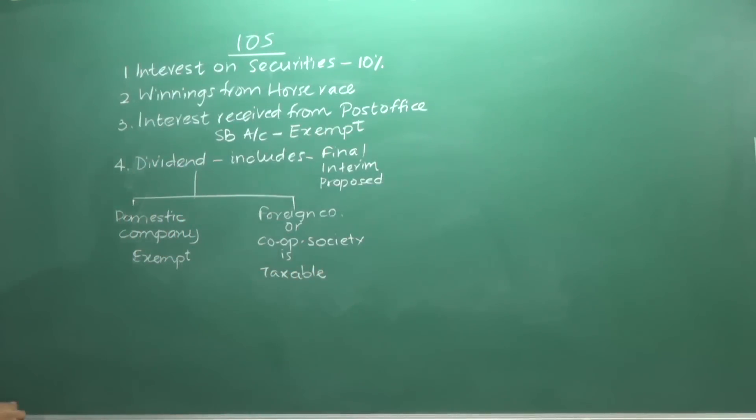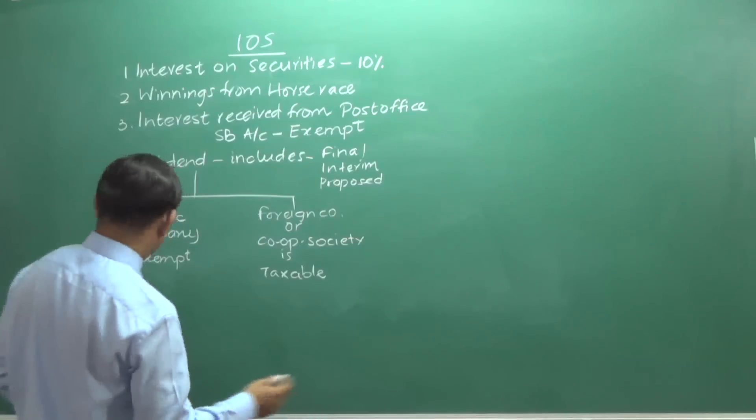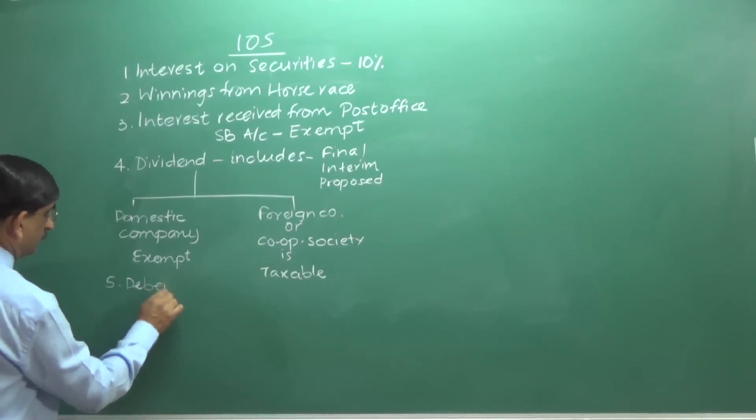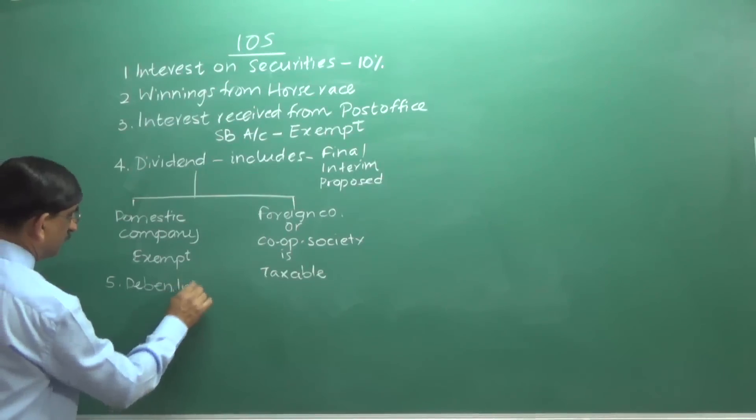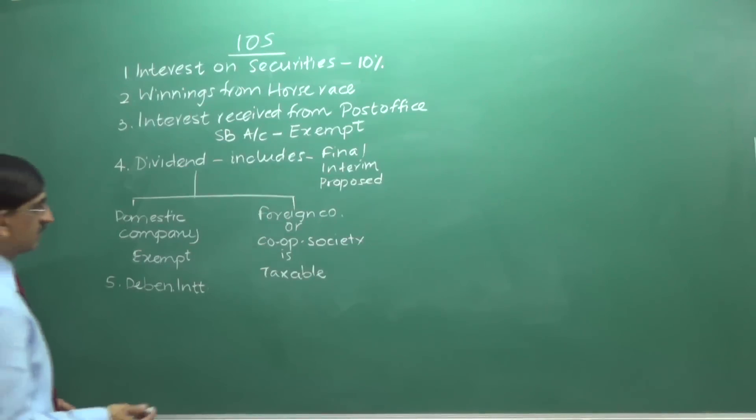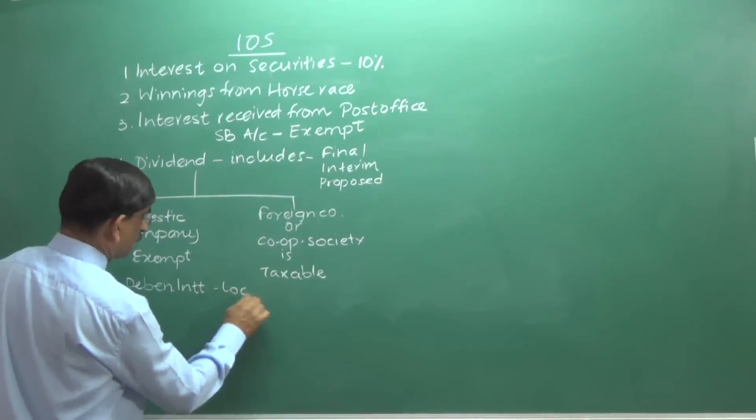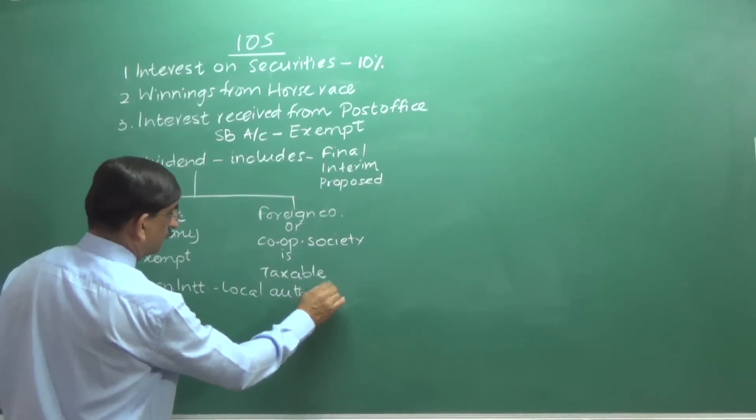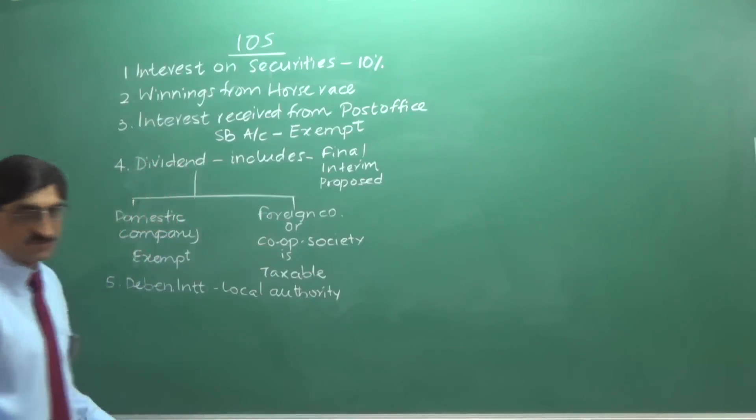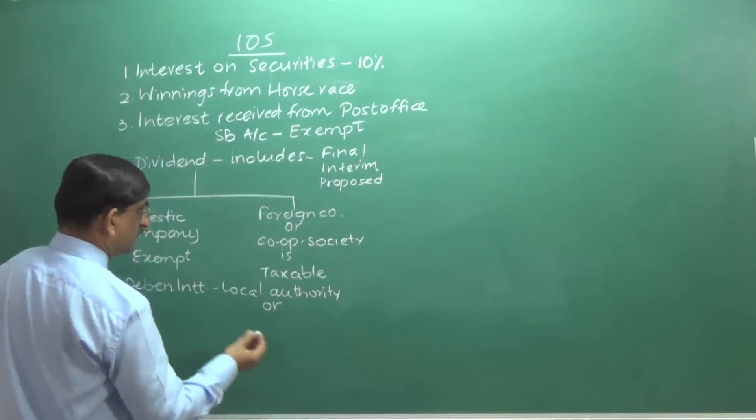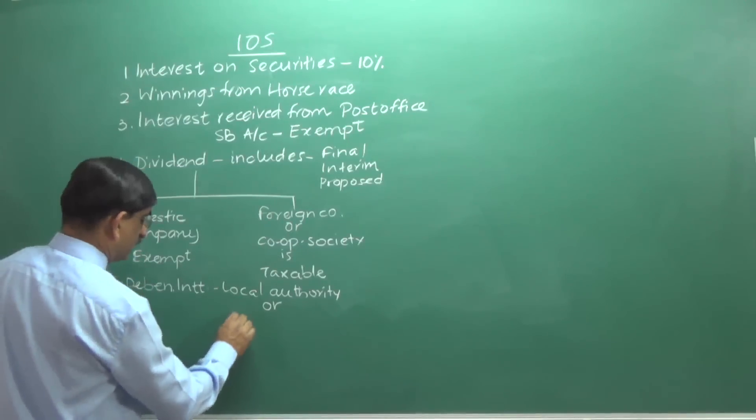This is about dividend. Next, we have debentures. Debenture interest. This we would have received from a local authority like Karnataka KXED board or a foreign company.